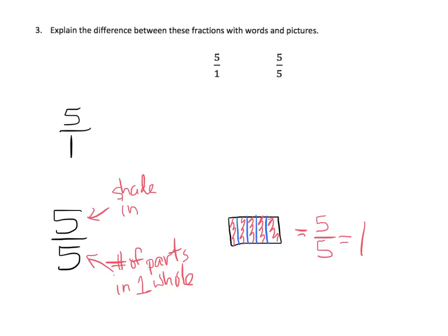Whereas five over one — five wholes — means each whole number, and I'll try to make it the same size. Here's one whole number; it's been cut into one whole piece, so I'm not supposed to make any slices. It's just there's a whole. And this says I'm supposed to have five of them.